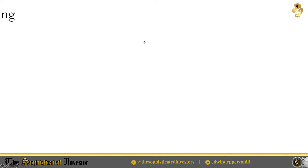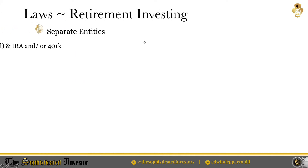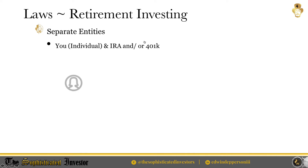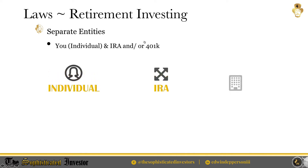Let's start covering the laws of retirement investing. Let's all agree that they need to be separate entities — meaning you individually, your IRA (individual retirement account), and your 401k, which is typically a company-sponsored plan. Those are three separate entities viewed by the IRS. Therefore, there are specific guidelines and rules for how each one of these entities can invest for retirement.